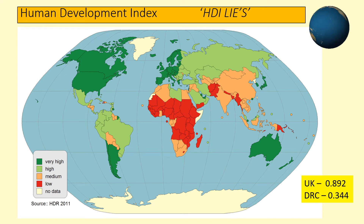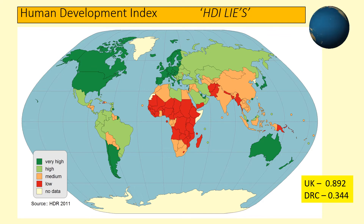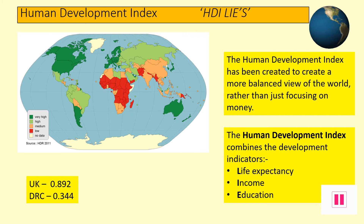Geographers also use the Human Development Index, with a scale of 0 to 1, combining three key indicators including life expectancy, income, and education. It is thought that this gives an even more accurate understanding of the level of development of different nations. The map shows how different countries compare. The UK is very high up the index with a score of 0.892, compared to the DRC with just 0.344 — one of the smallest scores in the whole world.